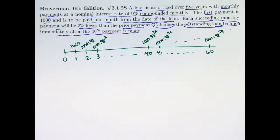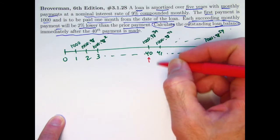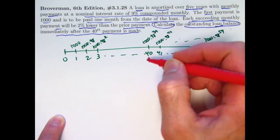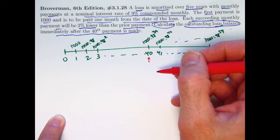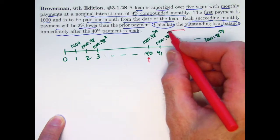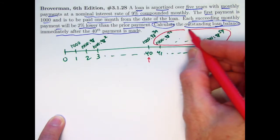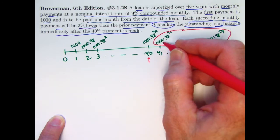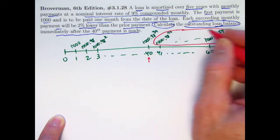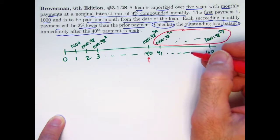We want to find the outstanding balance of this loan with this payback scheme at time 40 immediately after this payment right there. It would be best to use the prospective method here. That outstanding balance is going to be the present value of the payments that remain. Present value at time 41, one period before that payment right there. So we'll find the present value of this as an annuity immediate, but again, they're not level payments.